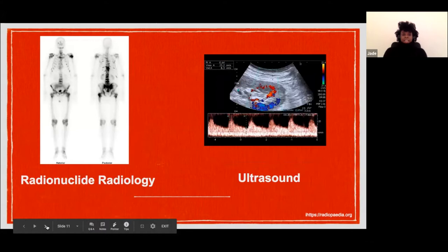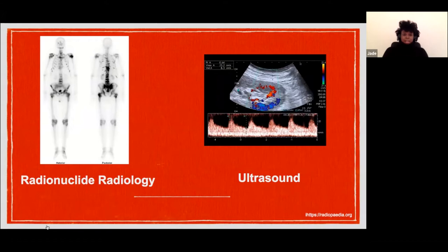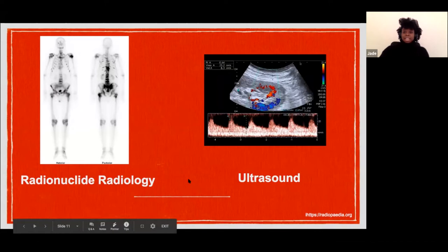Radionuclide radiology can be in black and white, grey, or colour, and is used to look at organ function — what's happening with the organ. This contrasts with CT and MRI, which look at anatomy. Both can also reveal pathology.